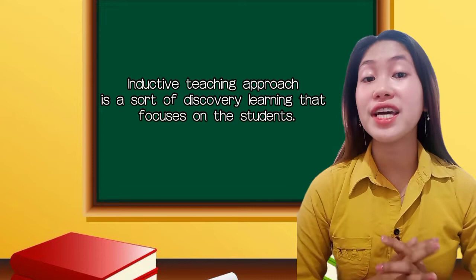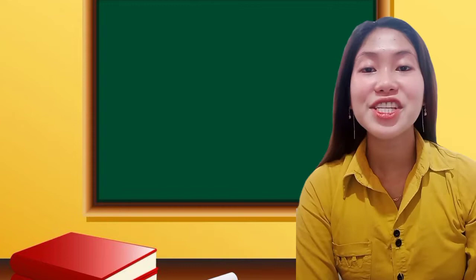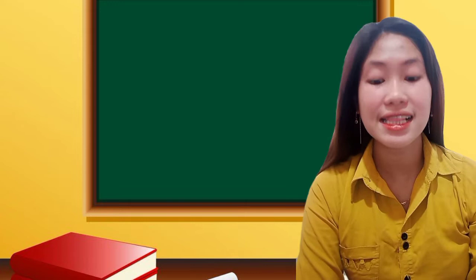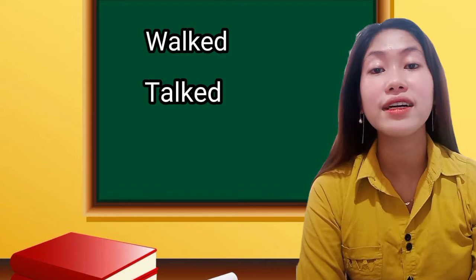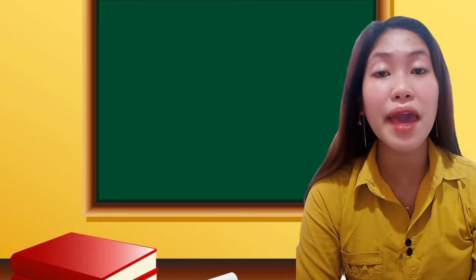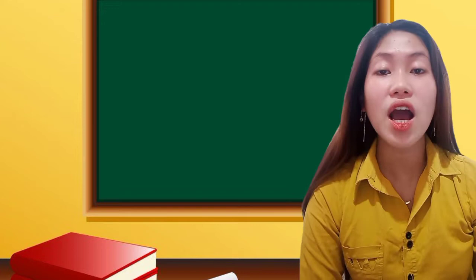For example, an instructor might show a few examples of a grammar point in English and then ask the students what they noticed. Such as in teaching simple past tense, the teacher will show students a list of words in the simple past, like walk, talk, and cling. Then the teacher will ask the students what is the same about the words given on the board, until they figure out the rules for themselves.